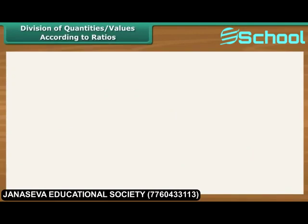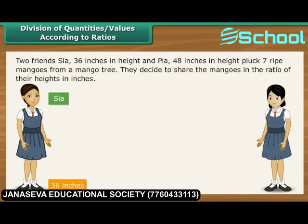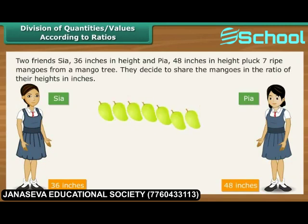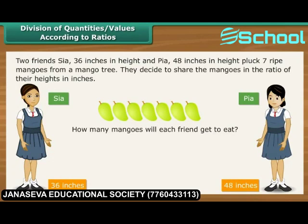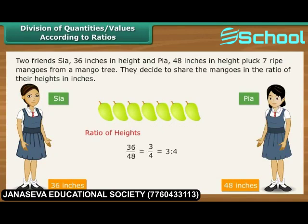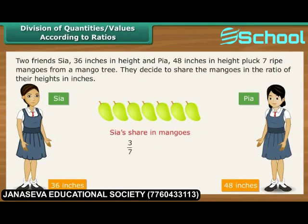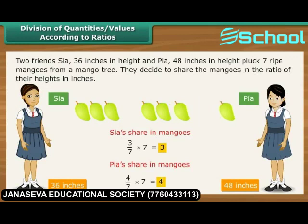Division of quantities and values according to ratios. Let us now use ratios to divide quantities and values. Two friends, Sia at 36 inches in height and Pia at 48 inches in height, pluck 7 ripe mangoes from a mango tree. They decide to share the mangoes in the ratio of their heights. The ratio of their heights is 3 is to 4. It means that out of every 7 mangoes plucked, 3 will be eaten by Sia and 4 by Pia.